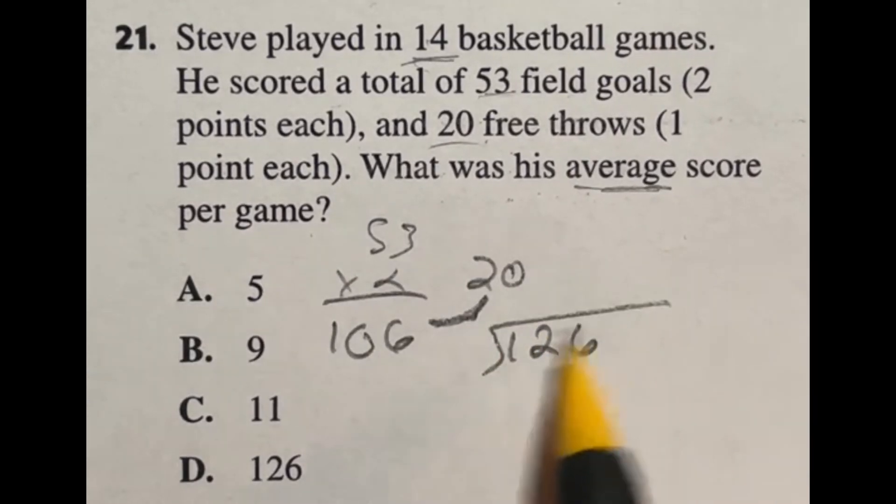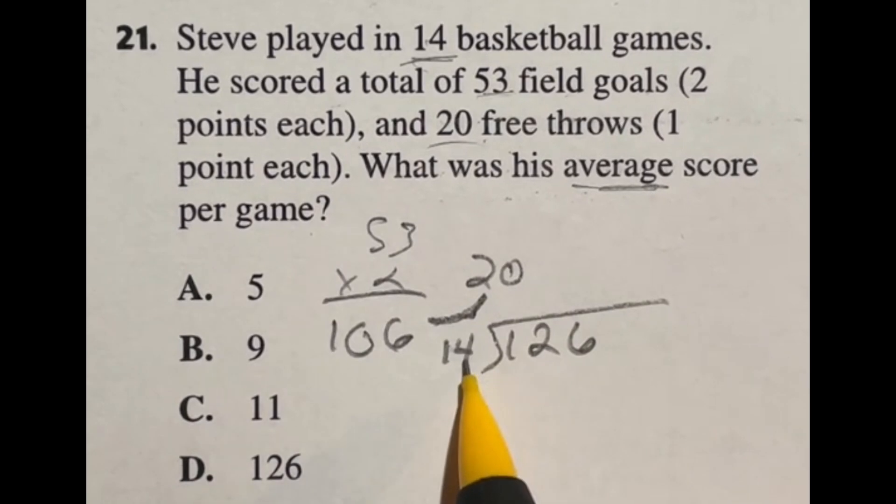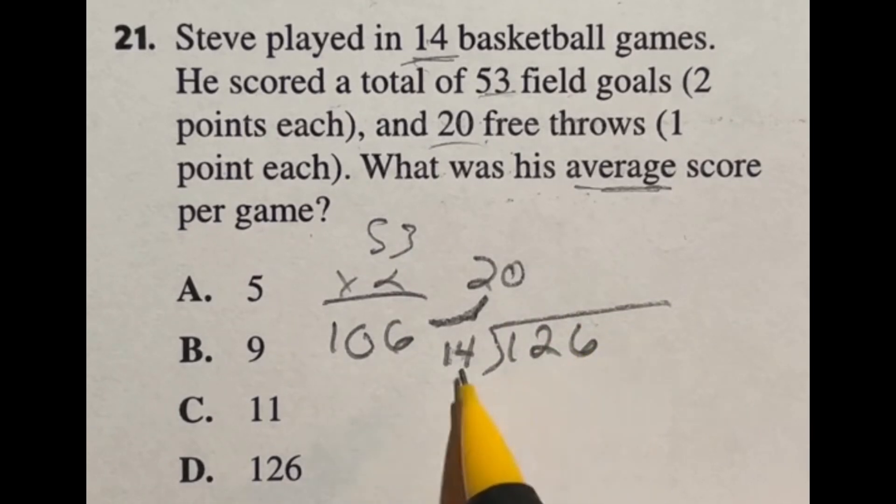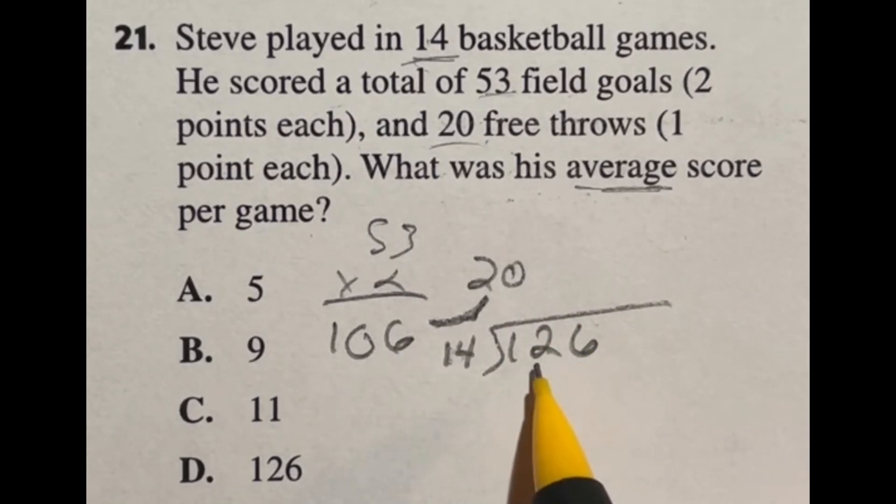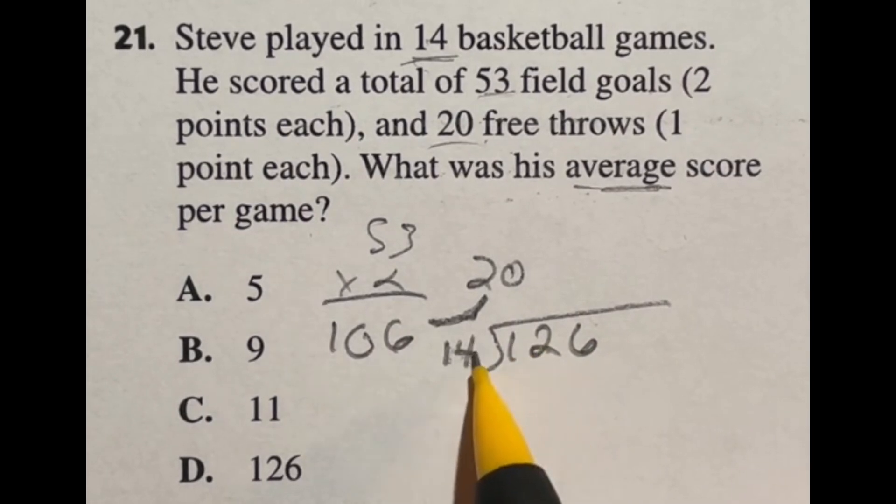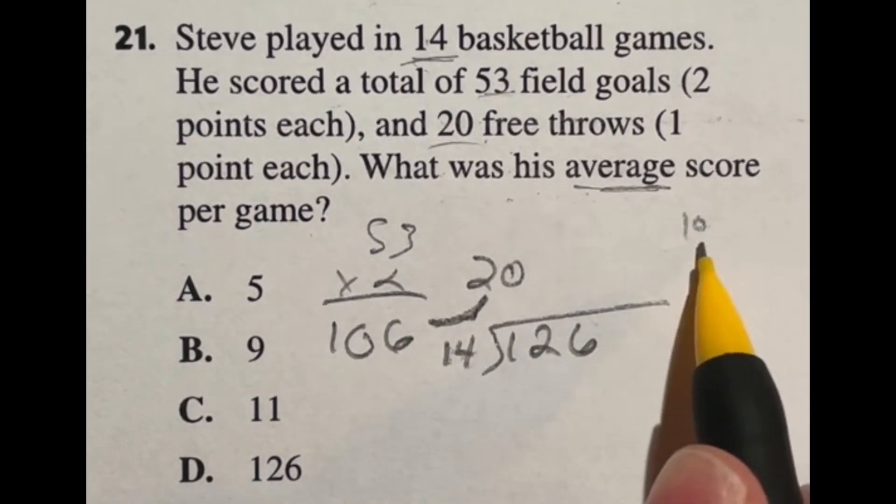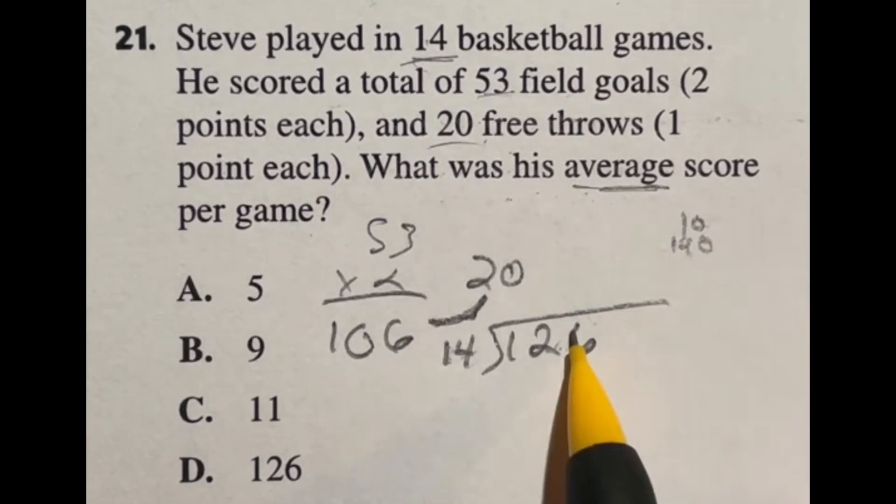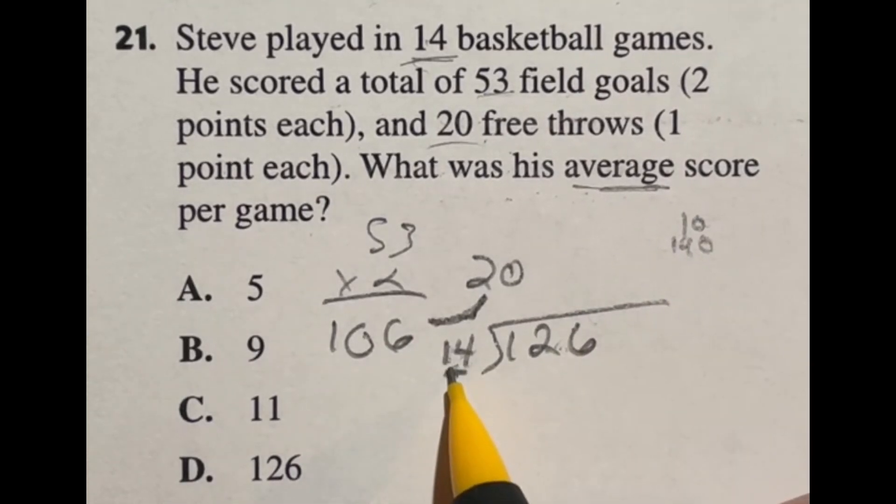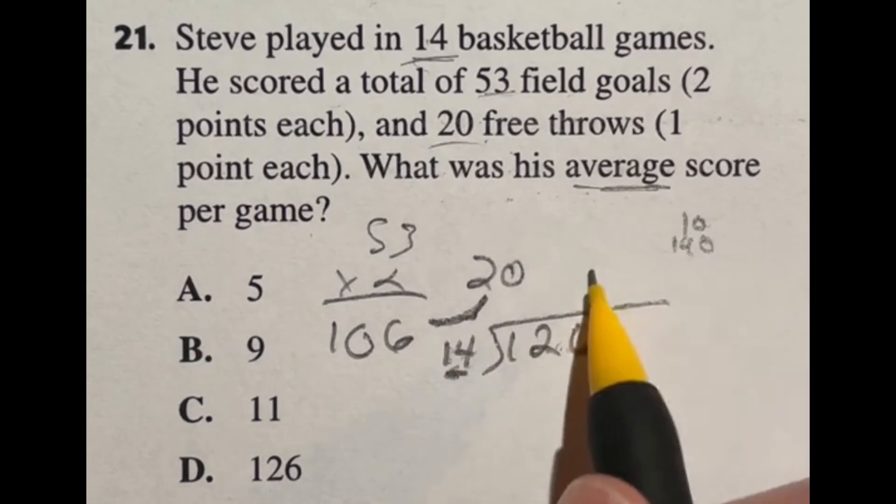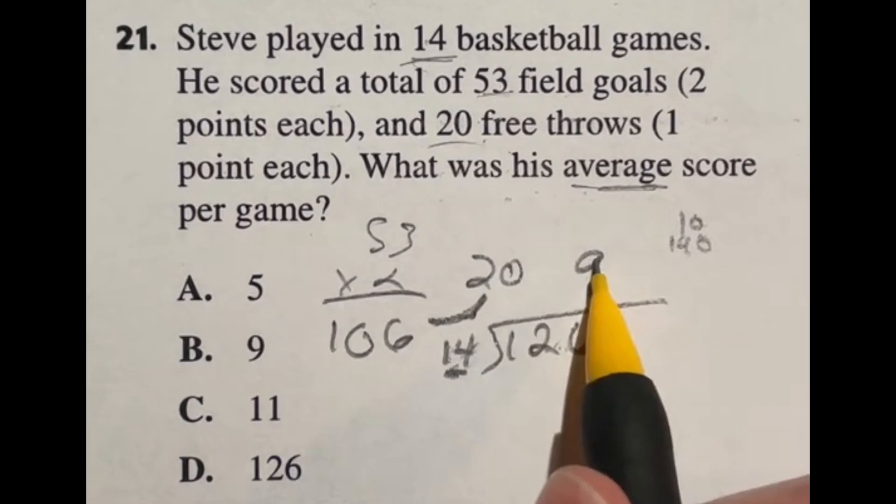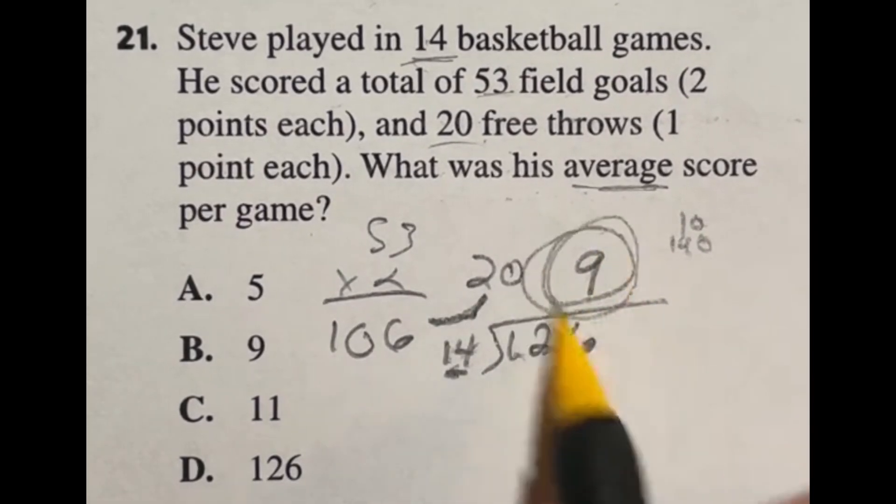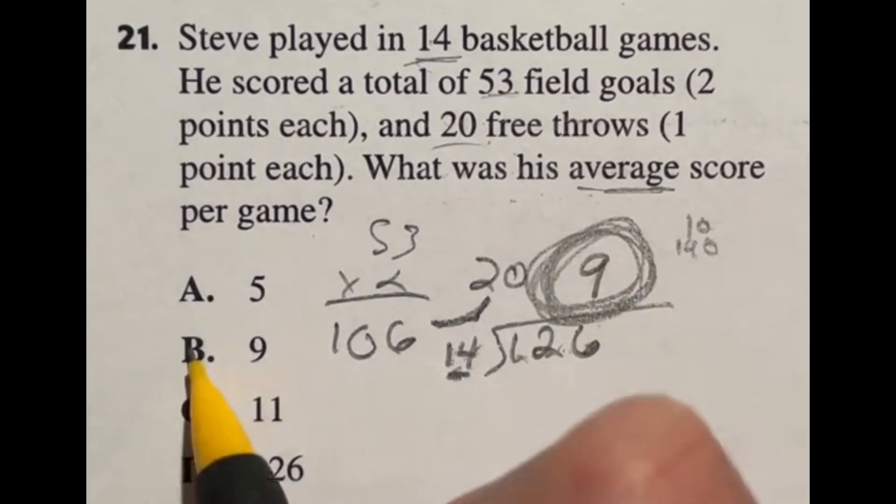Now we're going to divide that by 14. Notice 14 is not going to go in the 12, so really we're just saying how many times does it go in the whole thing. Looking at this I see the answer pretty quickly, and that's because 14 times 10 is going to give me 140. This is less than that but not by much. In fact it's exactly 14 less than that. So 14 times 9 gives you 126. Which means our final answer for the average here is 9, answer B.